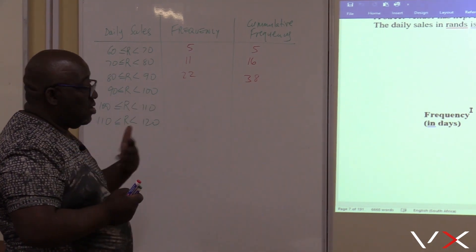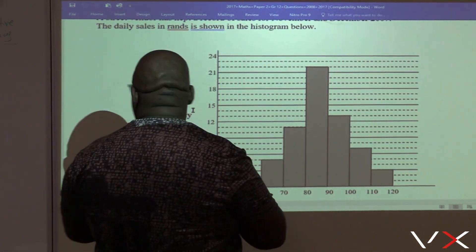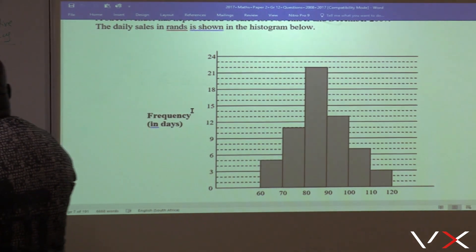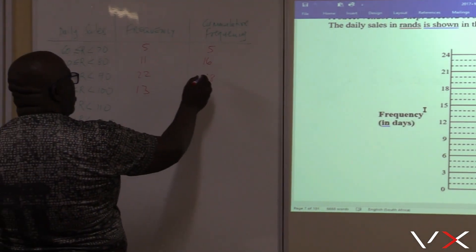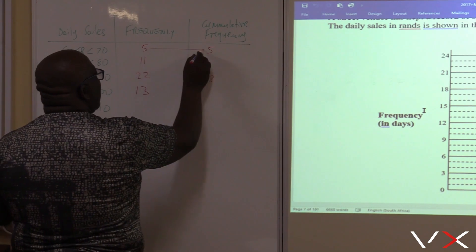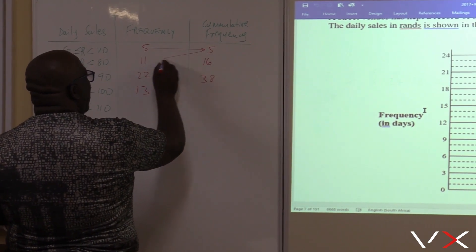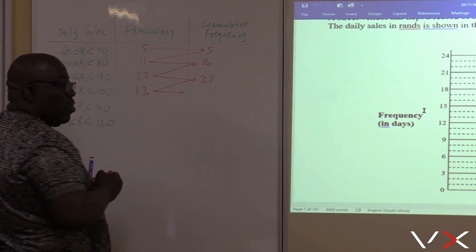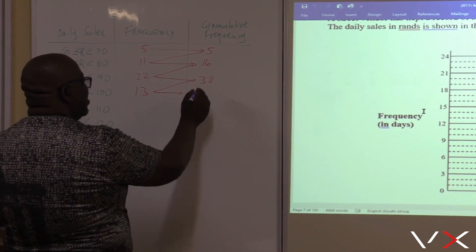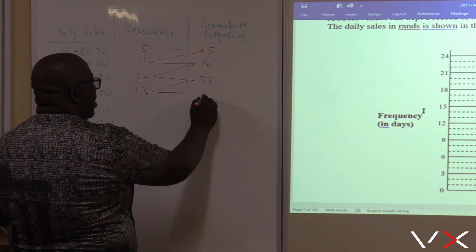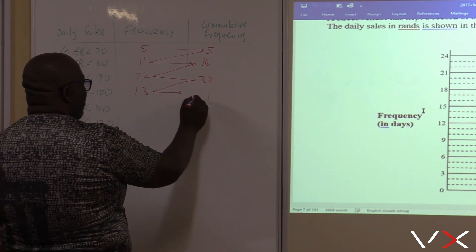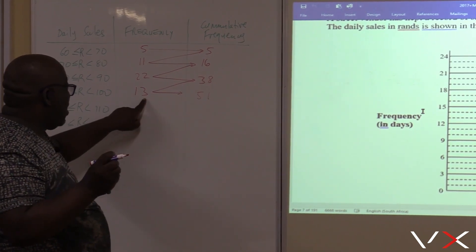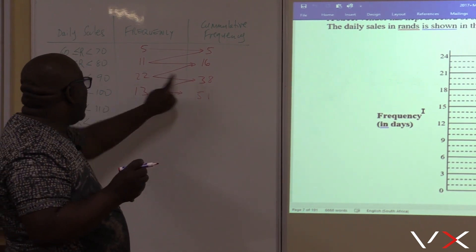The next bar is between 90 and 100. You go to the histogram and read off: this is 12, so it is 13. The frequency there is 13. For the cumulative frequency, you add the previous cumulative and the new frequency. So 38 plus 13 — 8 plus 3 is 11, carry 1, so 4 plus 1 is 5. That gives us 51. The cumulative frequency for 90 to 100 is 51.